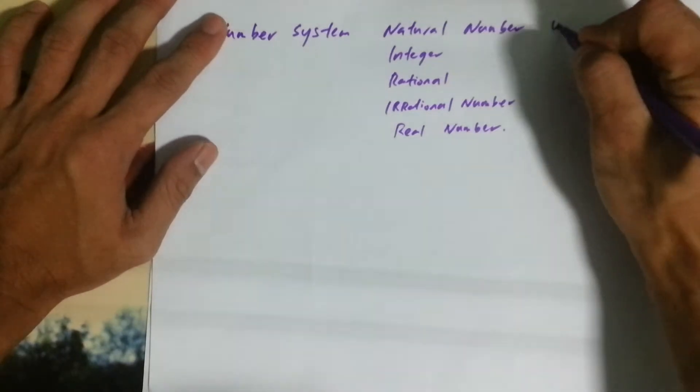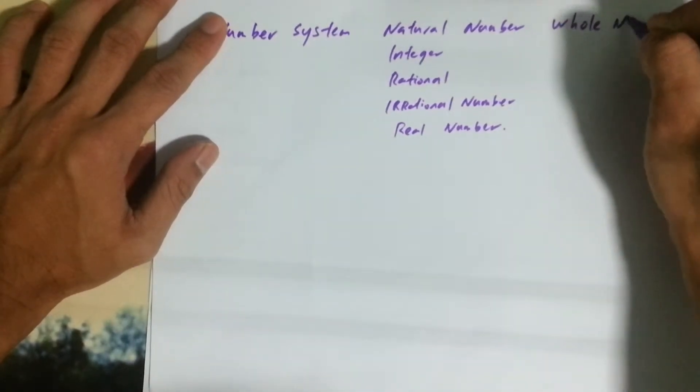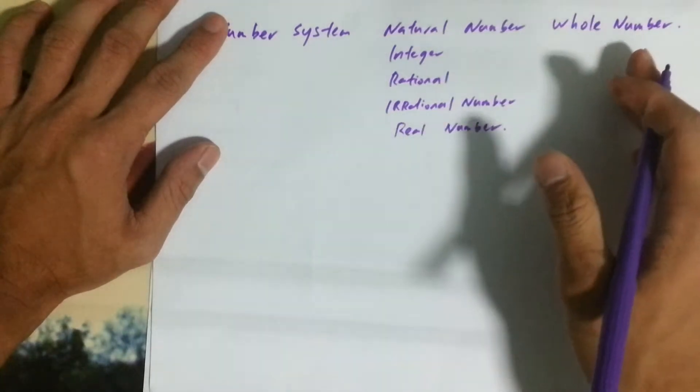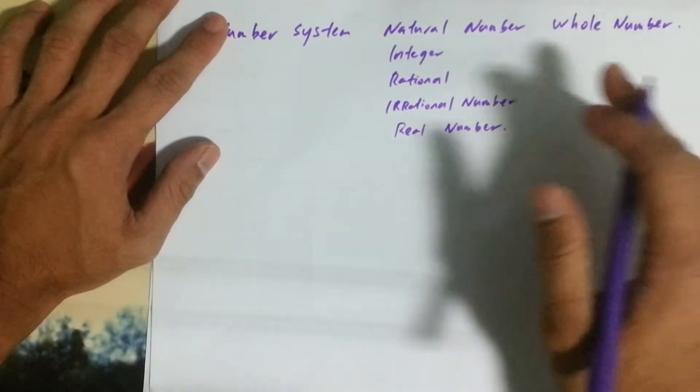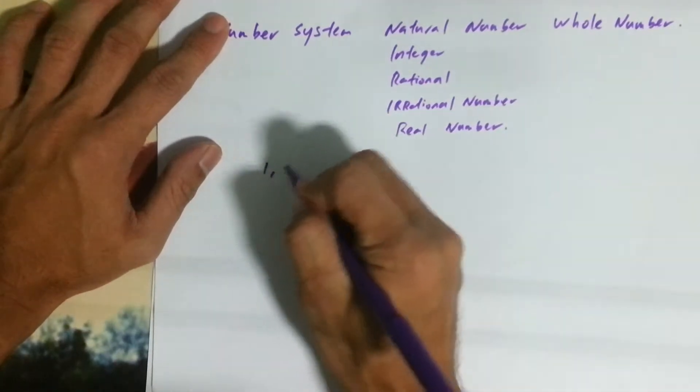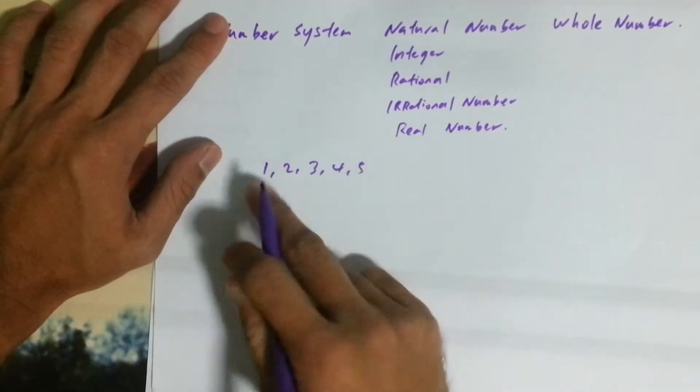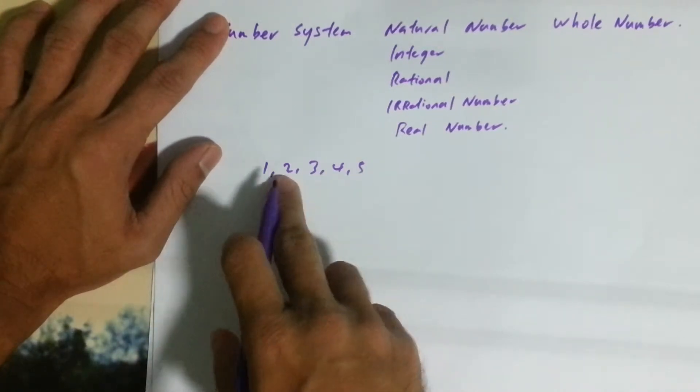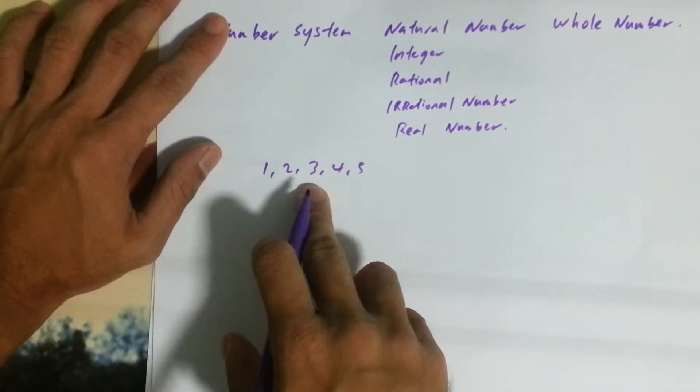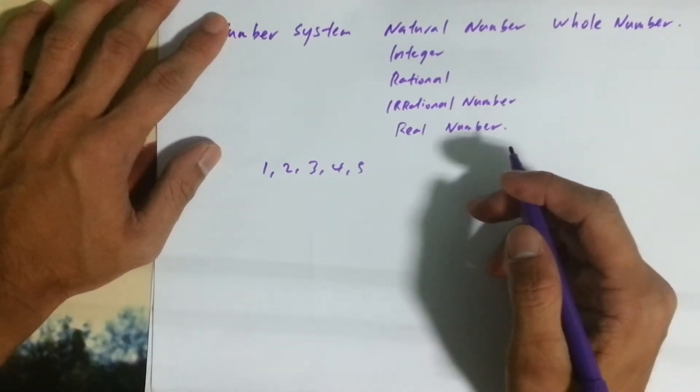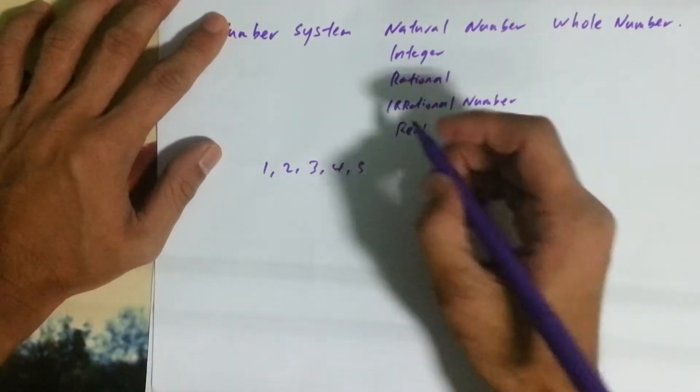Natural number, another form of saying is whole number. What is natural number or whole number? Natural numbers are one, two, three, four, five. They are whole, no decimal in between. Whole numbers are the natural numbers together with zero.